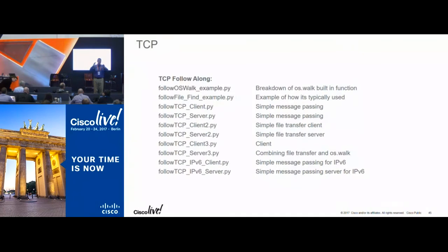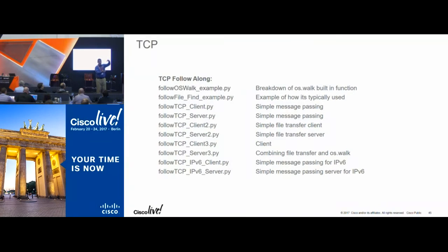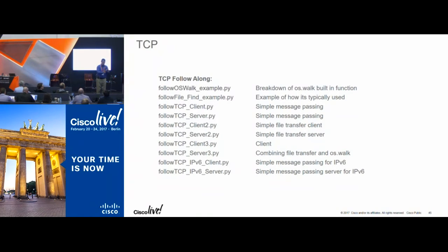With that big 65,000-byte chunk, you are responsible for sending it. You have to start a loop that takes 1K blocks and sends them — take it, send it, take the next 1K, send it — all the way to the end of your buffer. When you're done, you shut down.